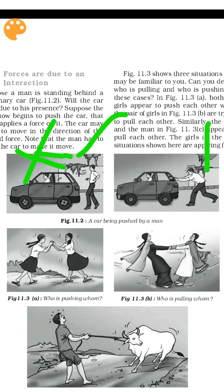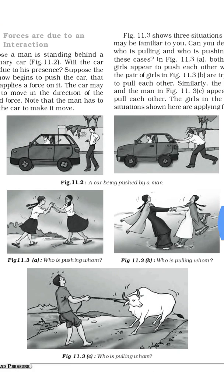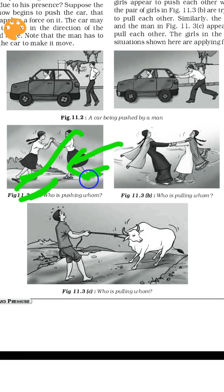If a man is interacting with a car and it is not moving, there is an interaction happening and a force is being applied. Looking at the diagram, objects are pushing each other. Pressure can result from objects pushing against each other.